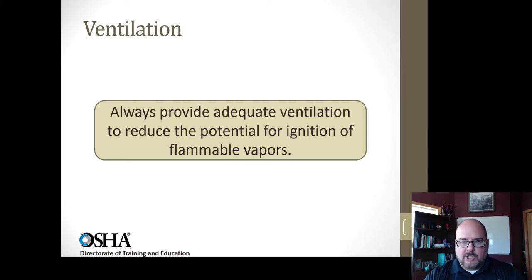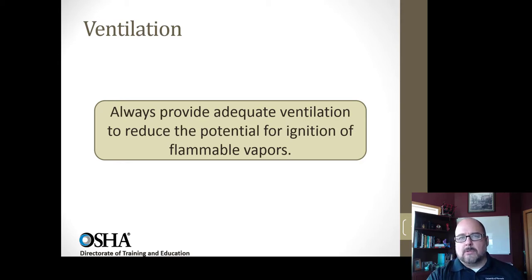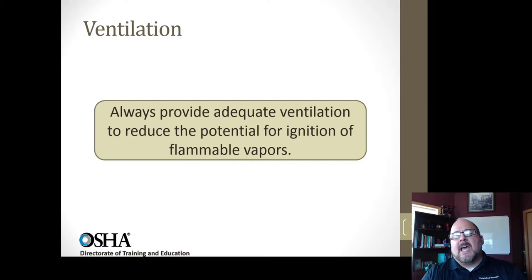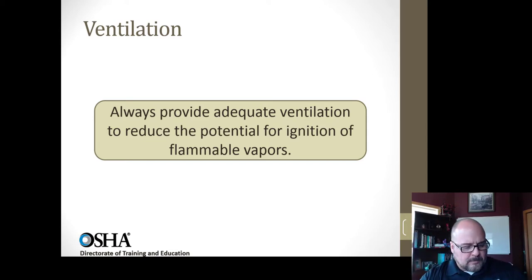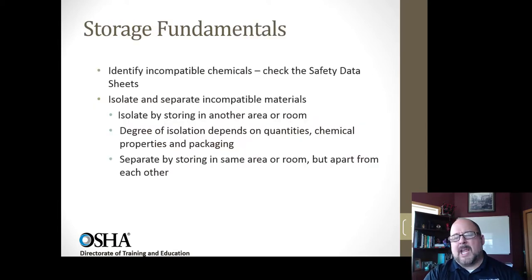Always provide adequate ventilation to reduce the potential for ignition of flammable vapors. Most flammable vapors have a density greater than air, so they tend to sink. For a flammable liquid ventilation system, you need an exhaust intake close to the floor — within about 12 inches — with cross-flow to collect and remove vapors from that point. Lighter gases like hydrogen are lighter than air and float upward. Carbon monoxide is near the density of air. Methane is also lighter than air. But flammable liquid vapors, typically chained carbons or petroleum distillates, tend to be heavier than air.